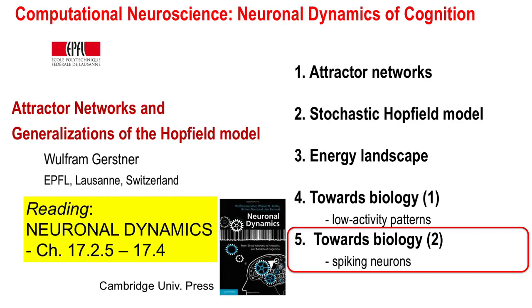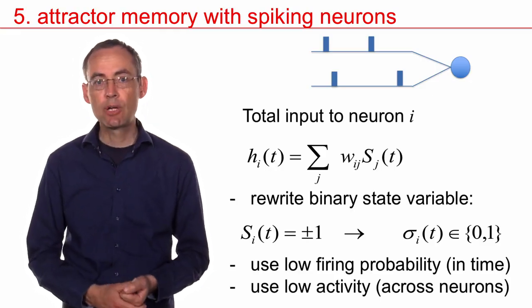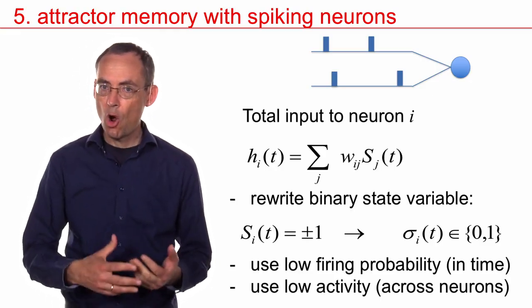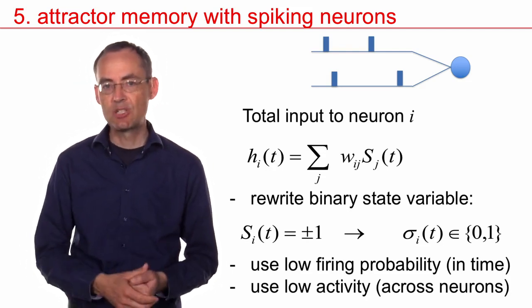Welcome back to the class Computational Neuroscience, Neuronal Dynamics of Cognition. We have been looking at attractor memories, but on the way towards more biological realism, there are still a few steps to be taken.